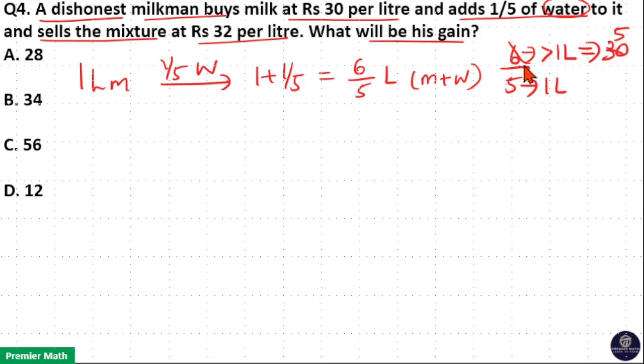Now, 6 goes 5 times in 30, means 1 part costs Rs. 5. Then 5 parts cost 5 into 5, Rs. 25, which means 1 litre mixture costs Rs. 25.